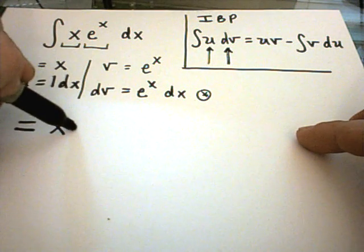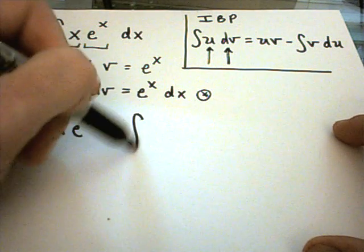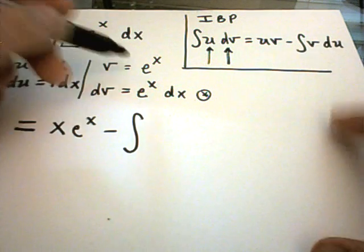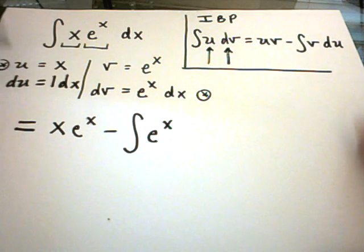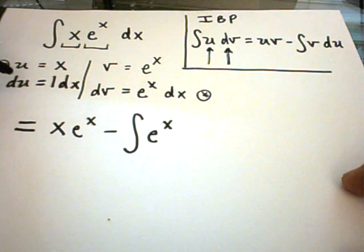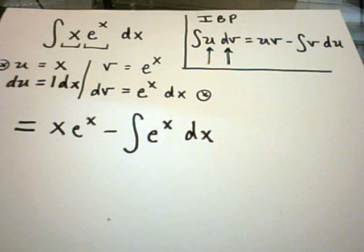which in this case is e to the x. Then from that, we subtract away the integral of v times du. That's e to the x times du, and du in this case is one dx.